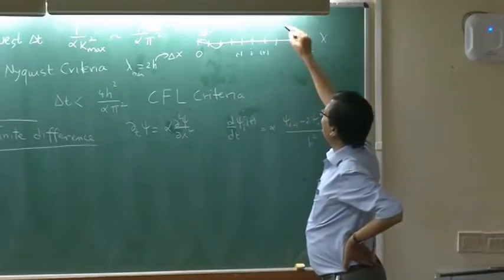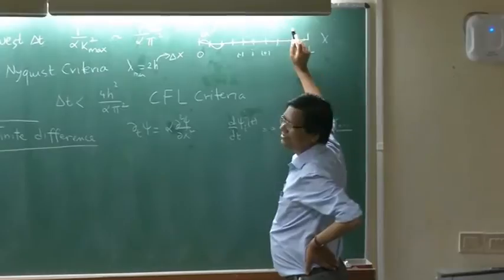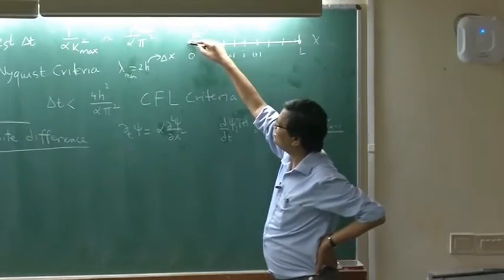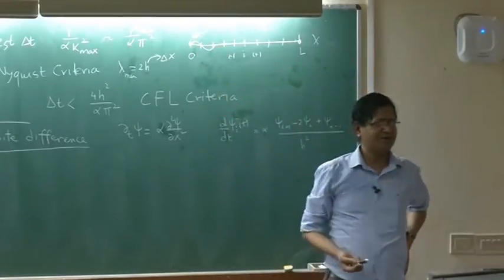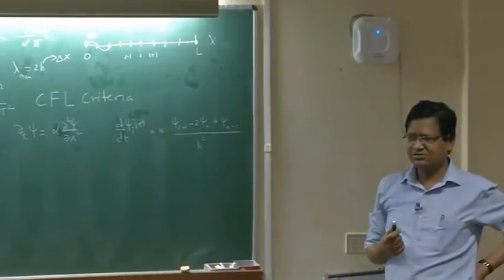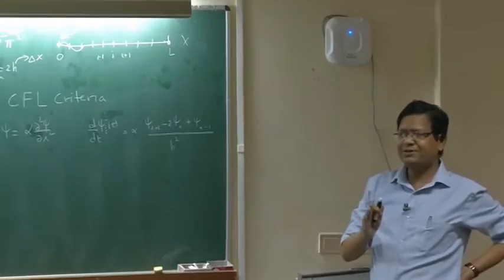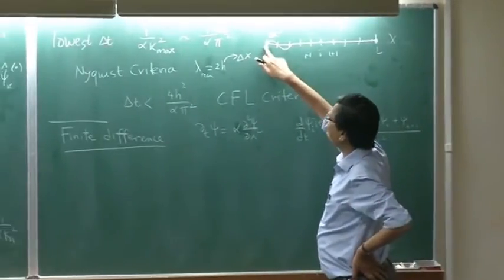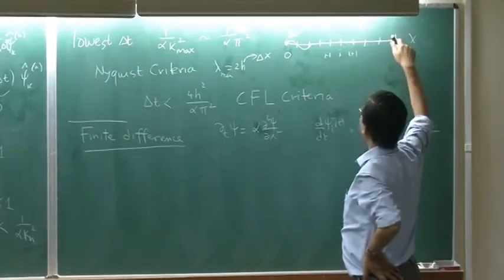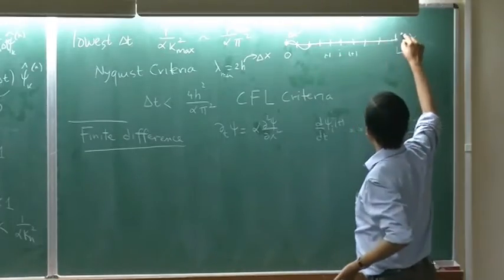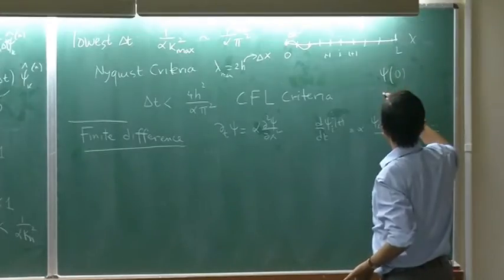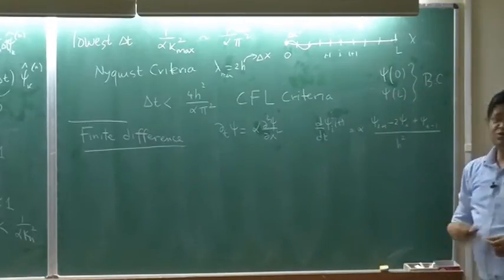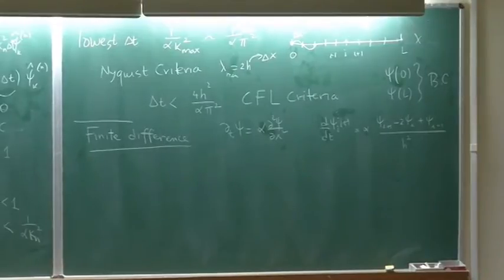These are the end points, but you have to be careful — should I time step the function at the boundaries or not? What is the value of the function at those walls? Zero. So I should not time step the boundary values. I do not want to time step the value of the function at the boundaries because they are zeros. These are the boundary conditions: psi at 0 and psi at L. Do not time step them; do not write an equation for those points, but write equations for everything else.